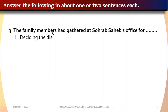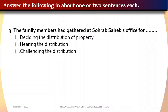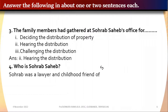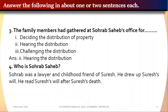Options for Question 3: one — deciding the distribution of property, two — hearing the distribution, three — challenging the distribution. The correct answer is hearing the distribution. Question 4: Who is Saurabh Sahib? Saurabh Sahib was the lawyer and childhood friend of Suresh Chabriya. He read Suresh's will after Suresh's death.